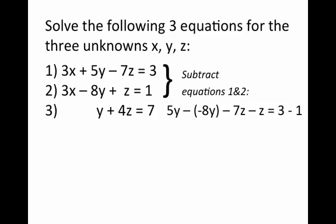So I'll subtract those two equations, and we'll have a 5y from the first equation minus a minus 8y from the second equation. We'll have a minus 7z from the first equation minus z from the second equation. And on the right-hand side, we'll have 3 from the first equation minus 1 from the second equation.